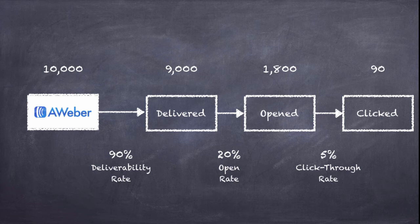So how can you improve these numbers? To improve your deliverability rate, get proper email marketing software like Aweber with high-powered servers and a whitelisted IP address. To increase your open rate, it's all about the title — the subject line of your email. If the title is boring or not relevant to the person you're sending to, they won't open it. The better your subject line, the higher your open rate. But just opening the email doesn't mean they'll take action.